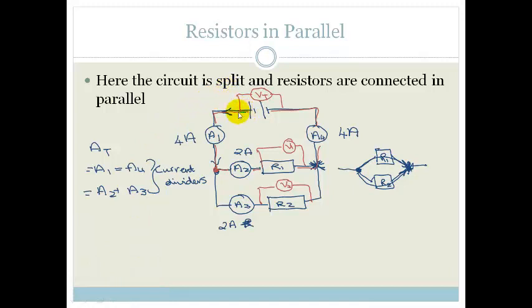whereas if I choose another color, I could draw this, and these electrons are traveling only through this circuit.